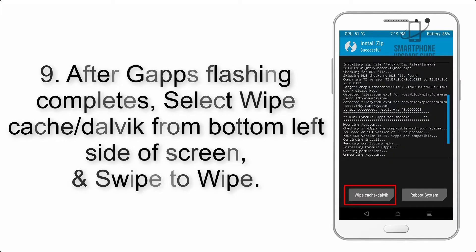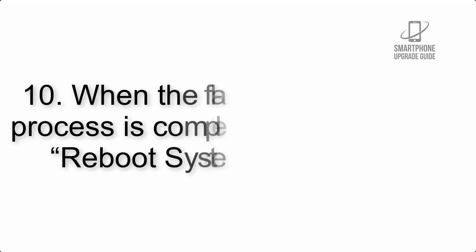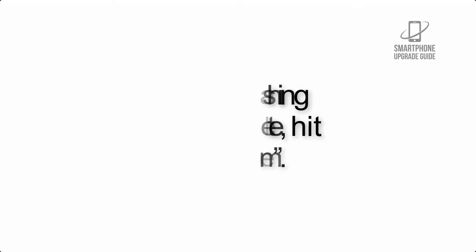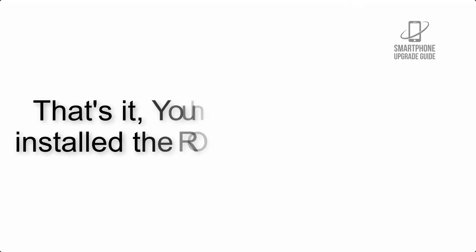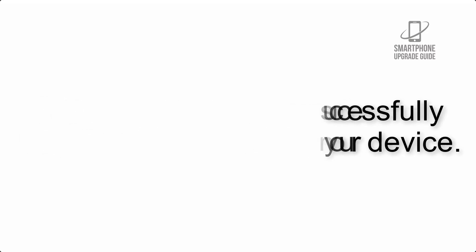Step 9: After GApps flashing completes, select Wipe Cache and Dalvik from the bottom left side of the screen and swipe to wipe. Step 10: When the flashing process is complete, hit Reboot System. That's it — you have successfully installed the ROM on your device.